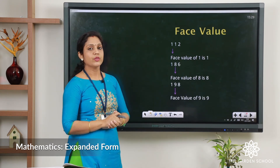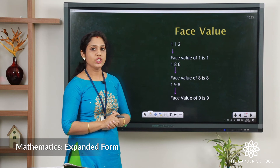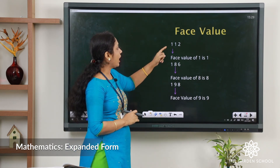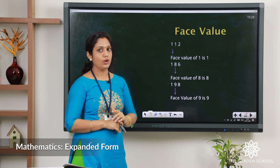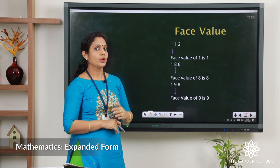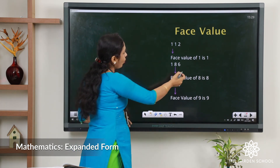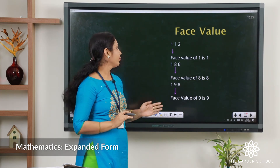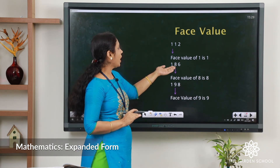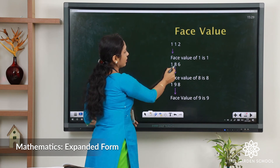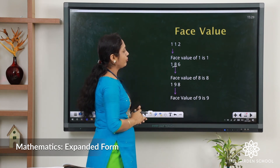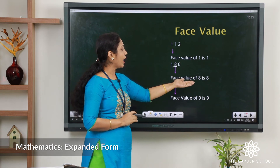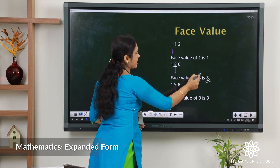Let us check the next number: 112. It is a three-digit number. In this we have to find out the face value of 1. It is 1 itself. So the face value is the digit itself. Next: 186 — the number 8. We have to find out the face value, so face value of 8 is 8 itself.